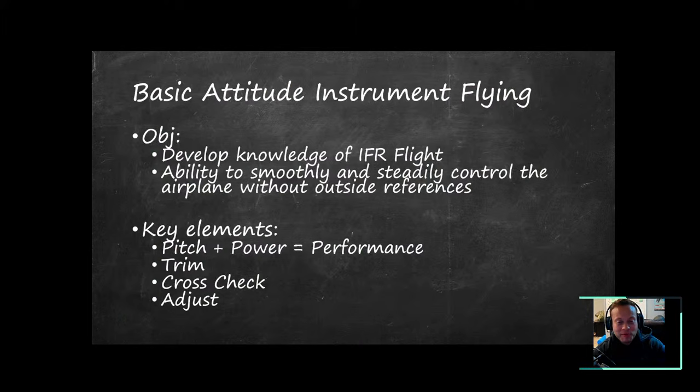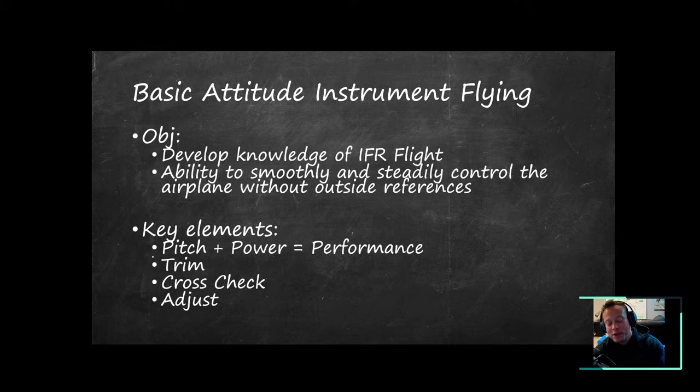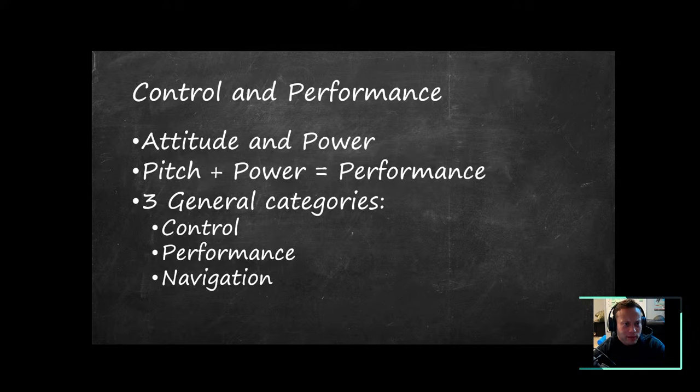Let's talk about basic attitude instrument flying. The objective is to develop knowledge of instrument flying — the ability to smoothly and steadily control the airplane without outside references. The key elements to take away: pitch plus power equals performance. Trim your aircraft so you can fly hands off, then cross-check and adjust your controls to fly the plane the way you want.